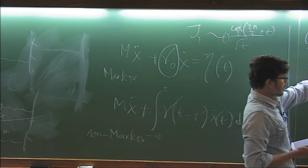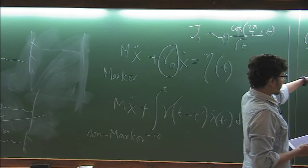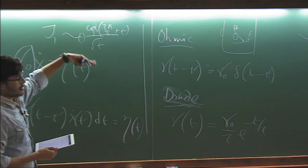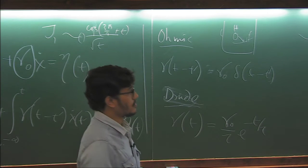And we can see that these are not these models, right? Because gamma t in Ohmic is delta coordinate, delta function, in Drude it is exponential. But here it is some different function, it is a power law.